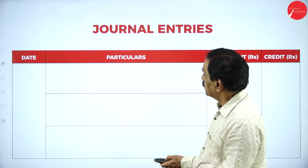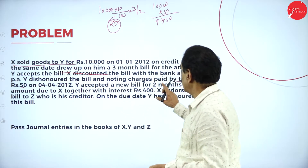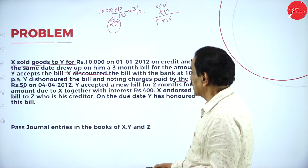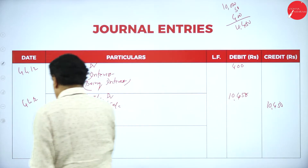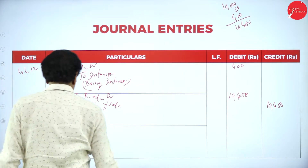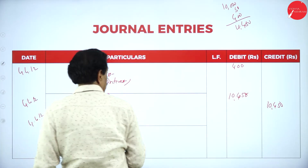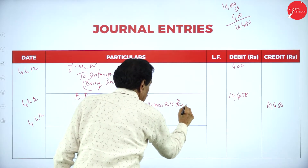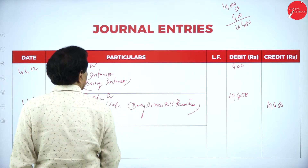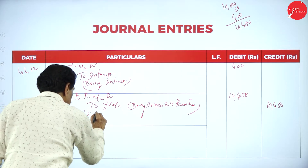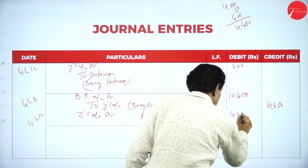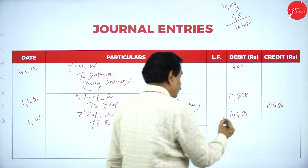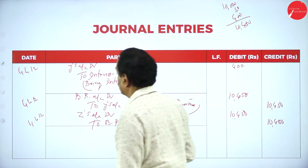X endorsed the bill. He endorsed the bill to Z. Same date. Z account — being the new bill received, 10,450. Then same bill is endorsed to Z. Z account debit 10,450. To BR account 10,450. Being the bill endorsed.